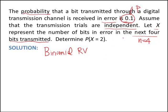And again, the first is the trials are independent. So what this means in this example is one bit getting transmitted in error doesn't make it more or less likely that the next one will be transmitted in error. That probability stays constant at 10%. So the first thing we have is independent trials. So we meet that condition.